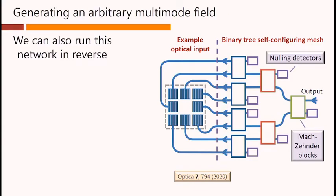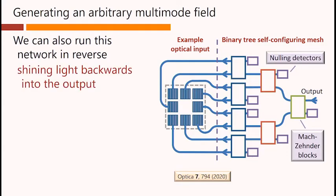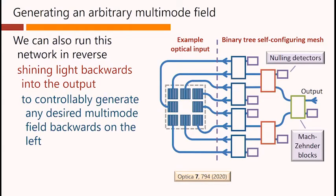Also, we can run this backwards to generate an arbitrary multimode field. In this case, we would shine light backwards into the output waveguide, and we would be able to controllably generate any desired multimode field backwards on the left.